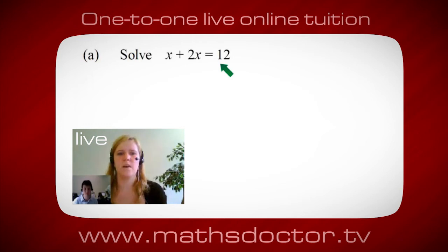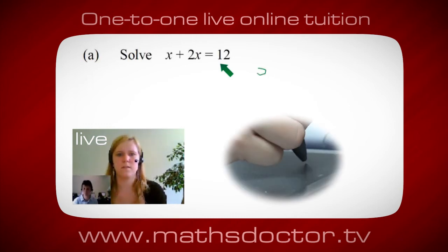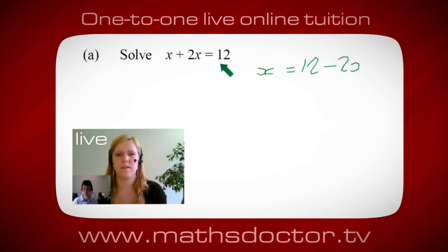OK, well I want x on its own. So I would put x equals 12 minus 2x.